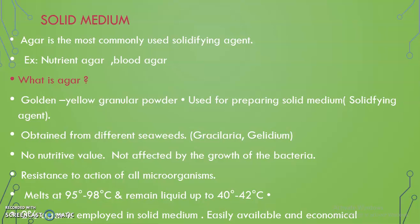Solid medium — agar is added; it is the most commonly used solidifying agent. Examples of solid medium are nutrient agar, blood agar, chocolate agar, MacConkey agar, etc. Agar is a golden yellow granular powder used as the solidifying agent. It is obtained from different sea weeds such as Gracilaria and Gelidium. It has no nutritive value and is not affected by the growth of bacteria. It melts at 95 to 98 degrees Celsius and remains liquid up to 40 to 42 degrees Celsius. We employ 2% agar in solid media, and it is easily available and economical.